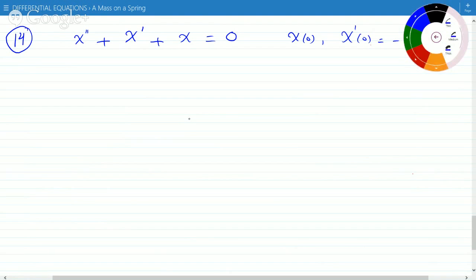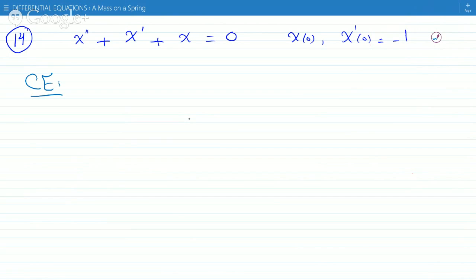So here, our characteristic equation will be r² + r + 1 = 0. And we can either factor or use the quadratic formula. This one doesn't factor, so you would have to use the quadratic formula.